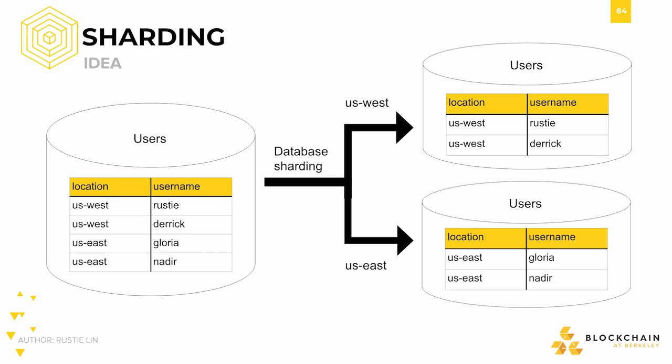One way databases have traditionally been horizontally scaled is through a strategy called sharding. Sharding is the idea of partitioning, or distributing, data in such a way that not every node in the network has the same copy of data. This way, we're distributing the load each node deals with, enabling a type of parallelism through these horizontal partitions, which we call shards. As long as the union of all data across the nodes in the network is the state of the database we're trying to emulate, it's just a matter of deciding where to keep each piece of data.